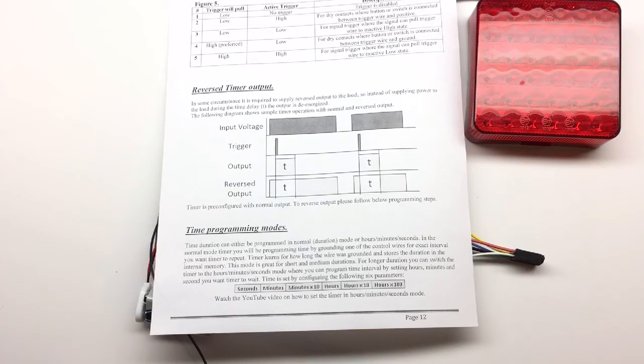So let's say if you need to set your time for 11 hours and 10 seconds, you would set seconds to 10, minutes to 0, minutes by 10 to 0, hours to 1, and hours by 10 to 1. So you have 10 hours plus 1 hour plus 10 seconds. And that's how it works.